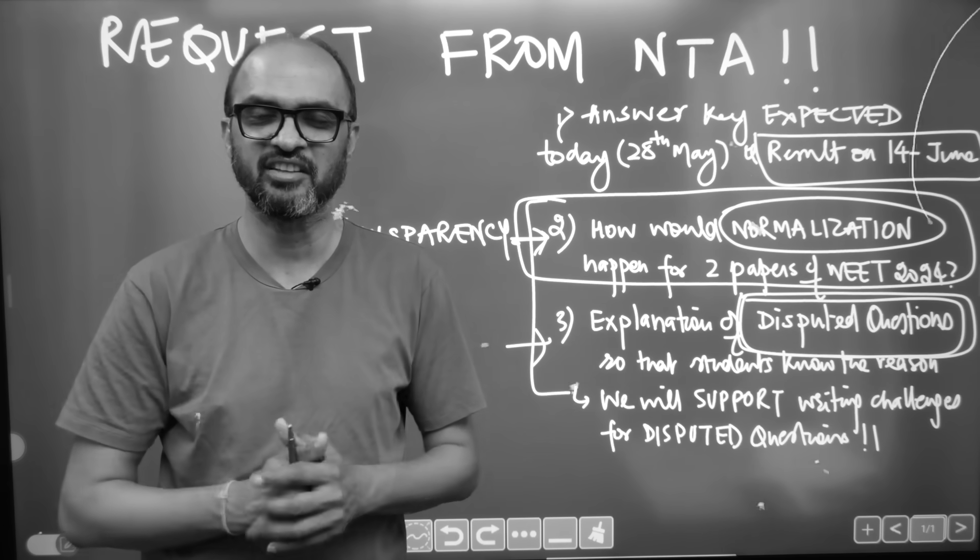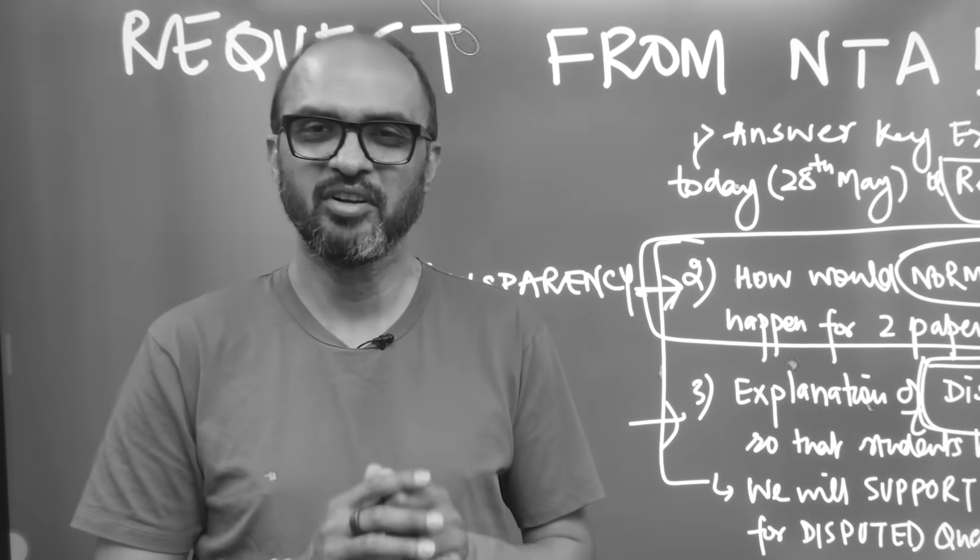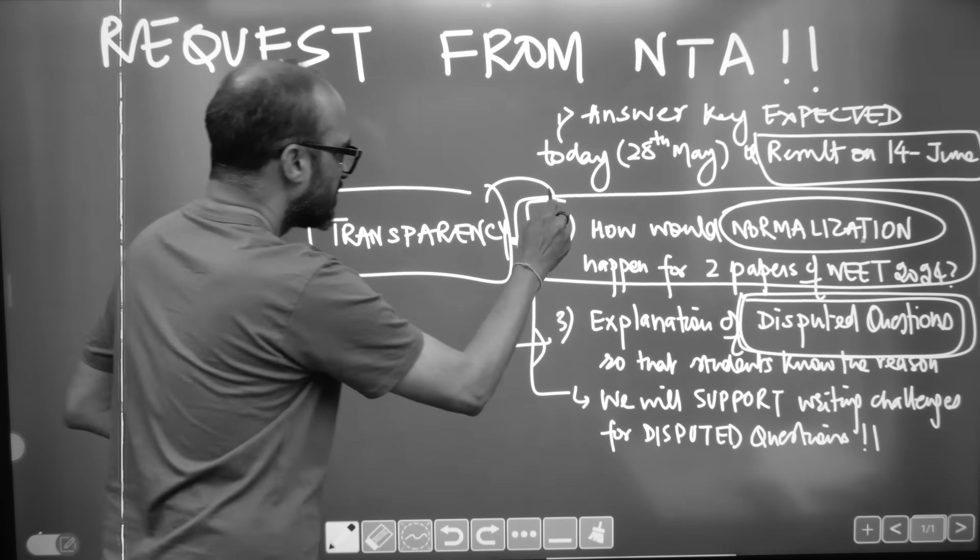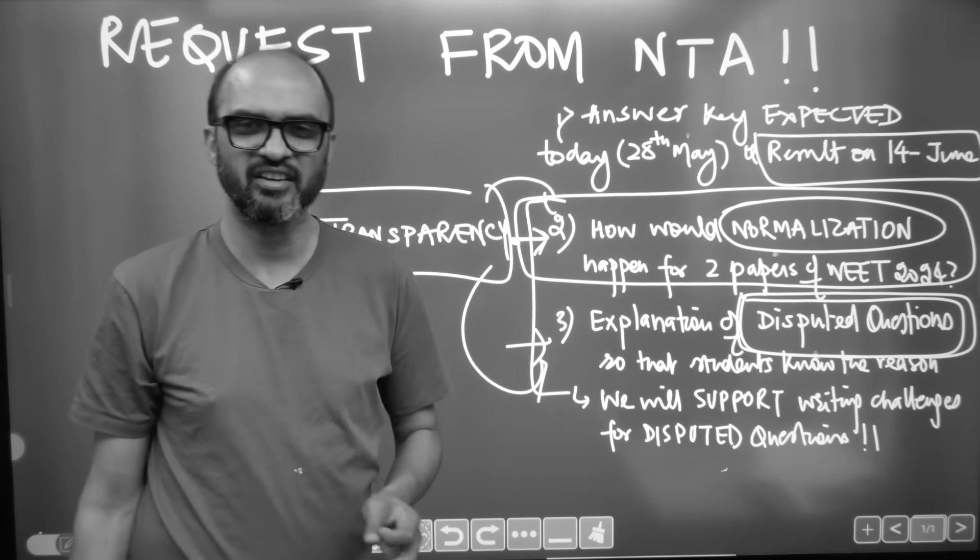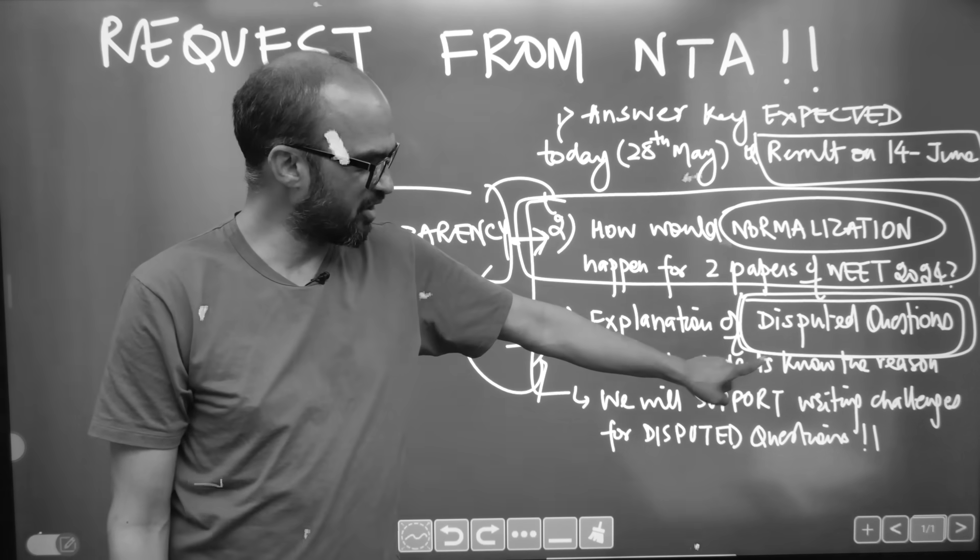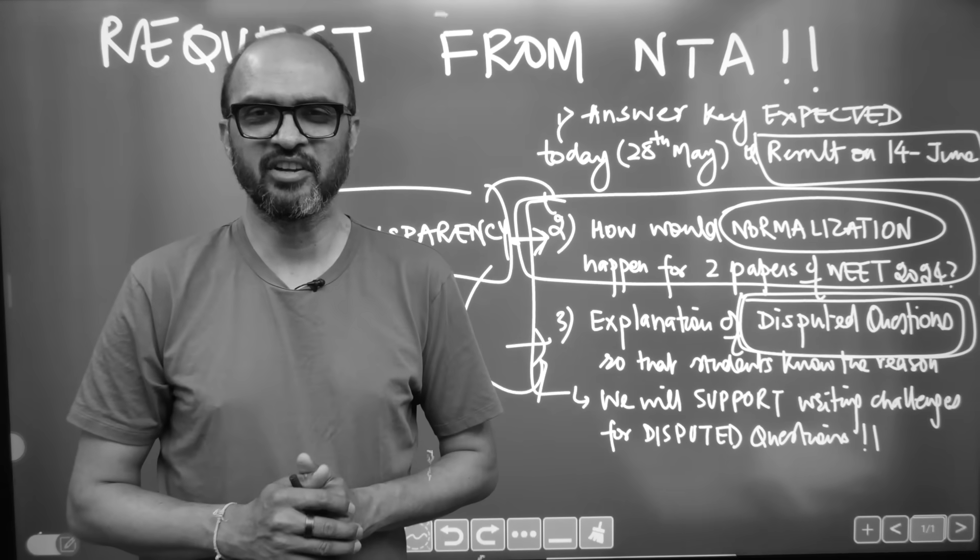It's not easy for 24 lakh people. It's not an easy job in the NTA center, but transparency should be there. At least in two matters, I request NTA that please tell us how to do normalization, and the disputed questions, explain them.